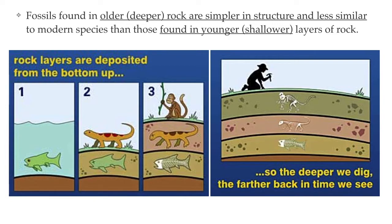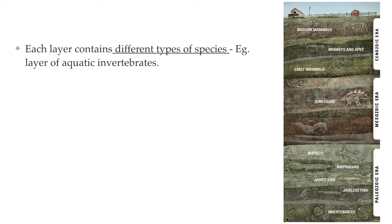Fossils found in deeper layers of rock are older than those found in the top layers. So when looking at fossils based on the layers in which they are found, we find that fossils from the bottom layers are simpler and very different from the organisms alive today. As we look further up at younger and younger rock layers, the fossilized plants and animals become more and more familiar until they are a lot like the organisms around us now.